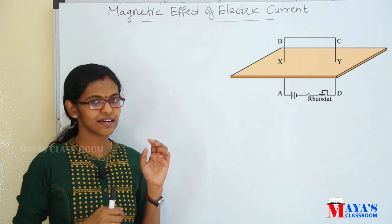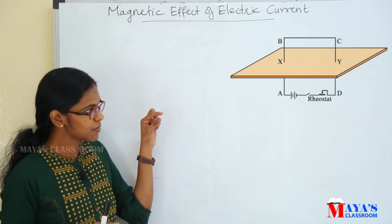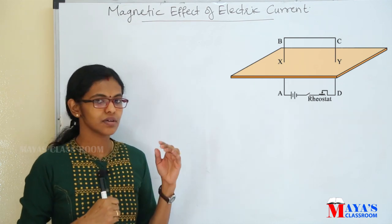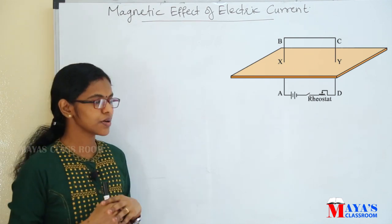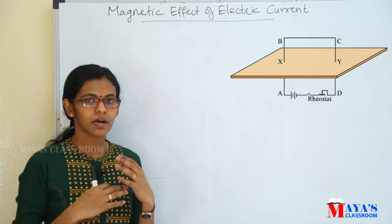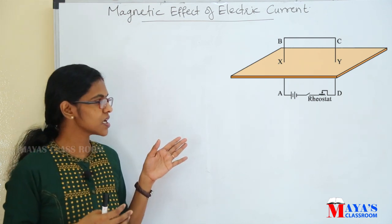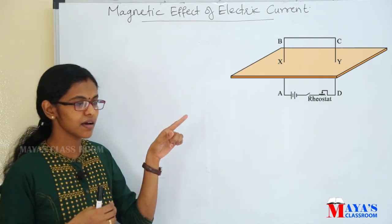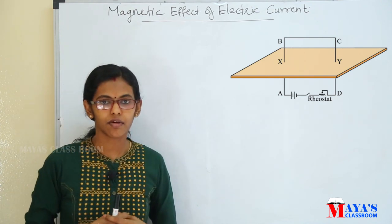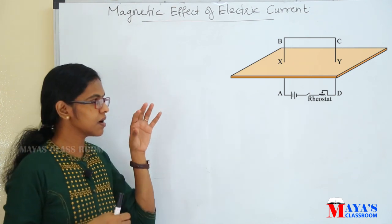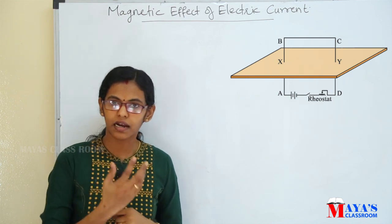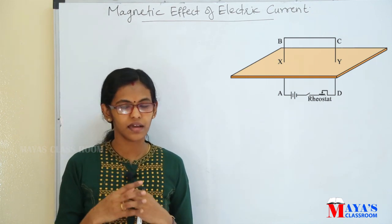There is a cardboard with a conductor, marked with points X and Y. There is a battery. If we close the circuit, current flows. Where does the current flow? It flows from A to B — that is the positive direction. If we use a magnetic compass, we will learn how the compass needle deflects.